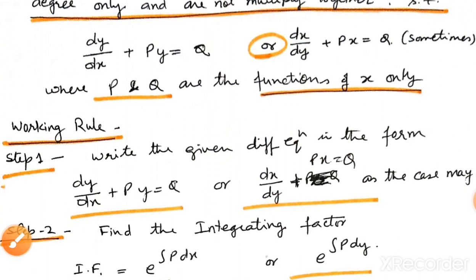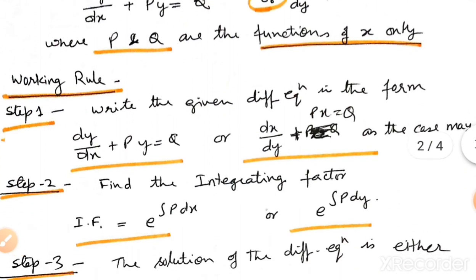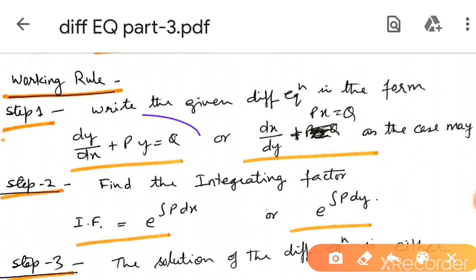Working rule: First, we convert our equation to standard form, either the dy by dx form or the dx over dy form, whichever our problem converts to.